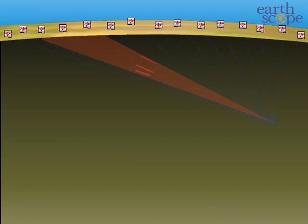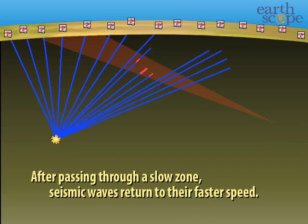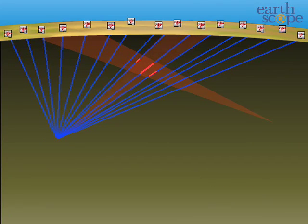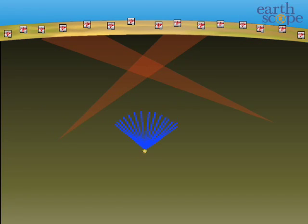Seismic waves travel through different materials at different speeds. By measuring the time it takes seismic waves to travel from an earthquake to different seismic stations, scientists deduce velocity variations within the Earth.